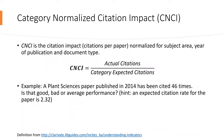Next, I'm going to talk about Category Normalized Citation Impact, or CNCI, which is similar to SNIP. CNCI is the ratio of actual citations to category expected citations. Let's look at an example.